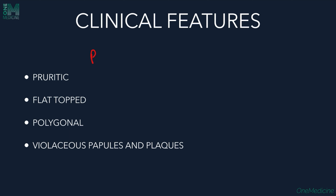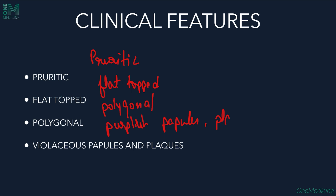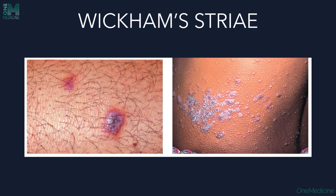The clinical features of Lichen Planus are pruritic, flat-topped, polygonal, violaceous papules and plaques — remembered by the six P's. Wickham's striae are seen on the lesions: they are delicate radiating white lines on the surface, corresponding histologically to focal hypergranulosis, and are well appreciated after application of water or oil over the lesion. Koebner's phenomenon, also called isomorphic phenomenon, is also seen in LP — new lesions appear at sites of trauma.